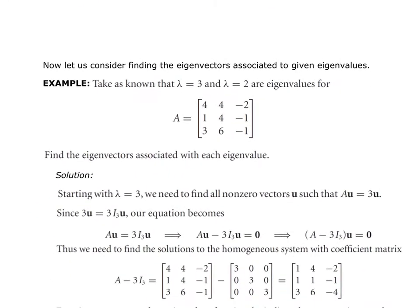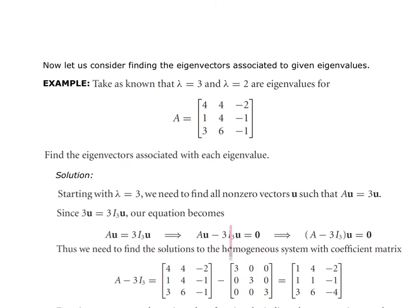Now let's find eigenvectors associated to given eigenvalues: lambda equals 3 and lambda equals 2. For lambda equal to 3, it must satisfy A times U equal to 3 times U. Since 3U equals 3 times the identity matrix of size 3 times U, the equation becomes A times U equal to 3I₃ times U. Bringing 3I₃U to the other side and factoring gives (A minus 3I₃) times U equals 0.